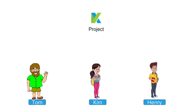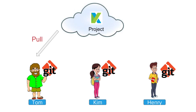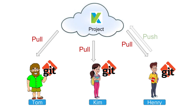The team can put their project on a remote repository or any common location. Every member installs Git on their system and then does a pull from the common repository to get a local copy of the project. They can work on their local copy and whenever they want, push it back to the remote repository. Git will take care of all the changes and version controlling.